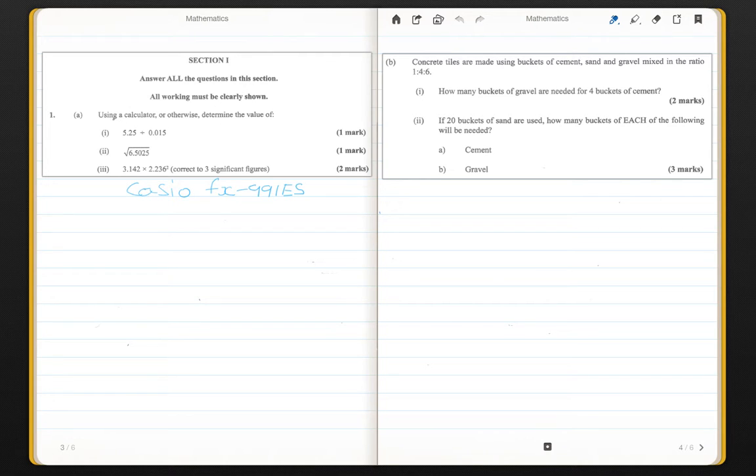So in question 1, it says, using the calculator or otherwise, determine the value of 5.25 divided by 0.015. Now, I'm not going to spend that much time on these questions because we can simply use our calculator to solve the answer. I'm using the Casio FX 991ES calculator. So for question 1, if you put it in your calculator, the answer is 350.